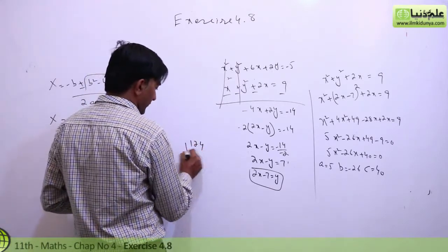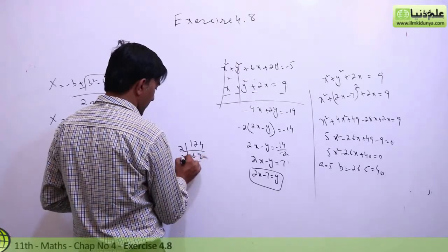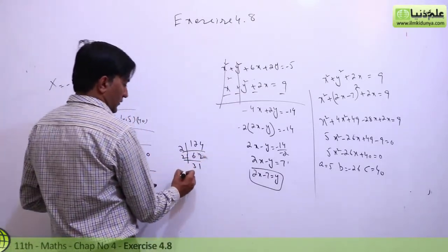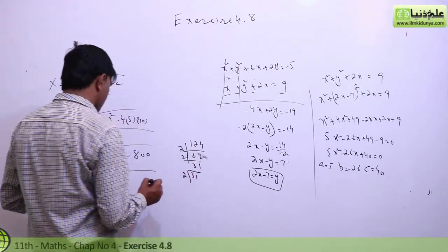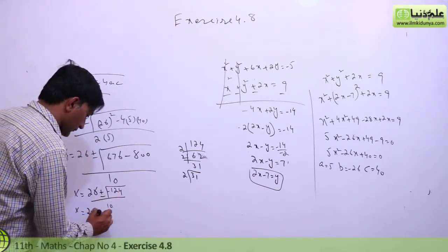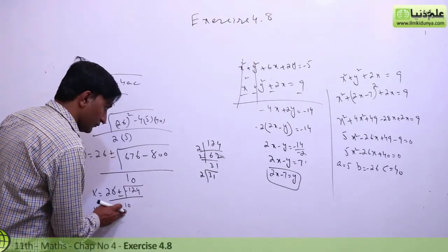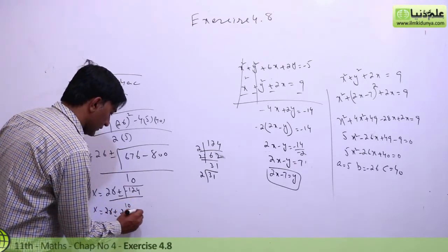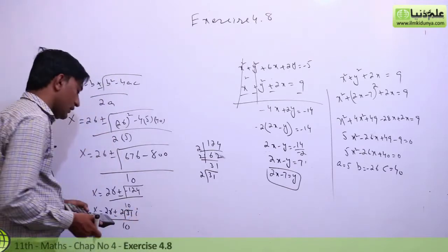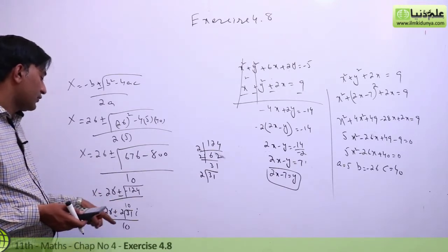676 minus 800 equals minus 124. Factoring 124: 2 times 62, 2 times 31, giving 2 and 31 under the root. So x equal to 26 plus minus 2 root 31 over 10.